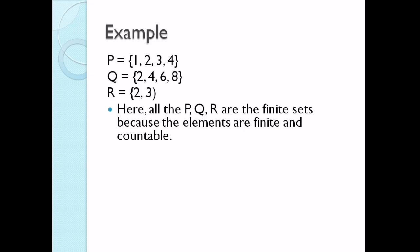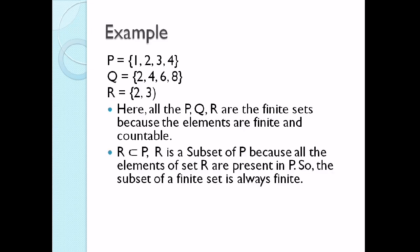So the 3 given sets are finite because their elements are countable. R is a subset of P because all the elements of set R — which are 2 and 3 — are present in set P. So the subset of a finite set is always finite.